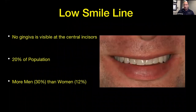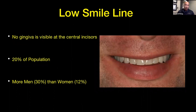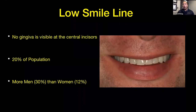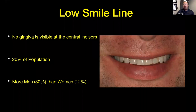The more ideal situation is patients with a low smile line, where they don't show any gingiva at all above their central incisors. This affects about 20% of the population. Due to their longer upper lips, men tend to have lower smile lines than women — 30% versus 12% — for an overall population of 20%.